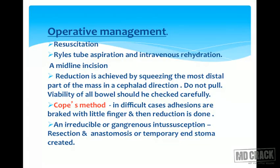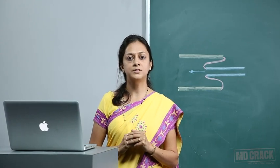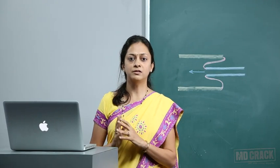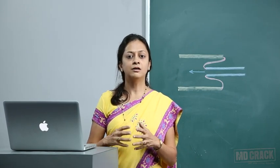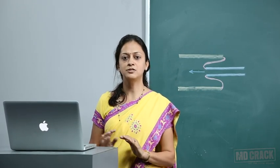Operative management: resuscitation followed by Ryle's tube aspiration and intravenous rehydration. A midline incision is taken. Reduction is achieved by squeezing the most distal part of the mass in the cephalad direction — do not pull. Viability of the small bowel should be checked carefully. If there are adhesions between the inner and outer part, break them with the finger — this is specifically known as Cope's method.